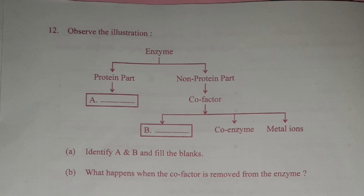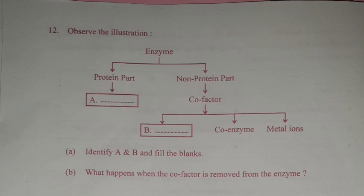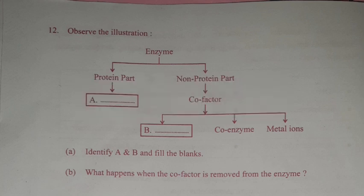Question 25: Observe the illustration. Identify A and B and fill in the blanks. Answer: A. Apoenzyme. B. Prosthetic group. Question B: What happens when the cofactor is removed from the enzyme? Answer: When the cofactor is removed from the enzyme, its catalytic activity is lost.